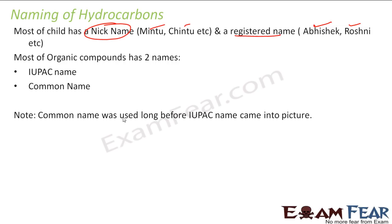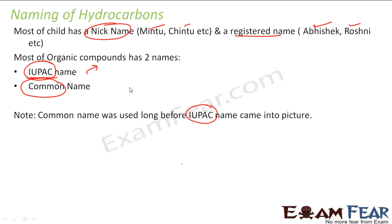Why do we have two names? Because common name was used long before the IUPAC name came into the picture. There was a committee which decided the naming convention much later. Before that, chemists used names like benzene, methyl chloride, ethyl chloride. Because there are millions of compounds, millions of hydrocarbons, and you can't remember the name of all of them.